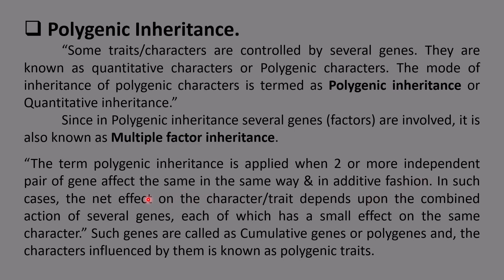This means there is a presence of two or more independent pairs of genes affecting a single character — for example, flower color or seed color. All independent pairs have the same effect on the phenotypic trait; it is not the case that one pair has a positive effect and another a negative effect. This happens in an additive or cumulative fashion, where the net effect depends on the combined action of several genes, each having a small effect.